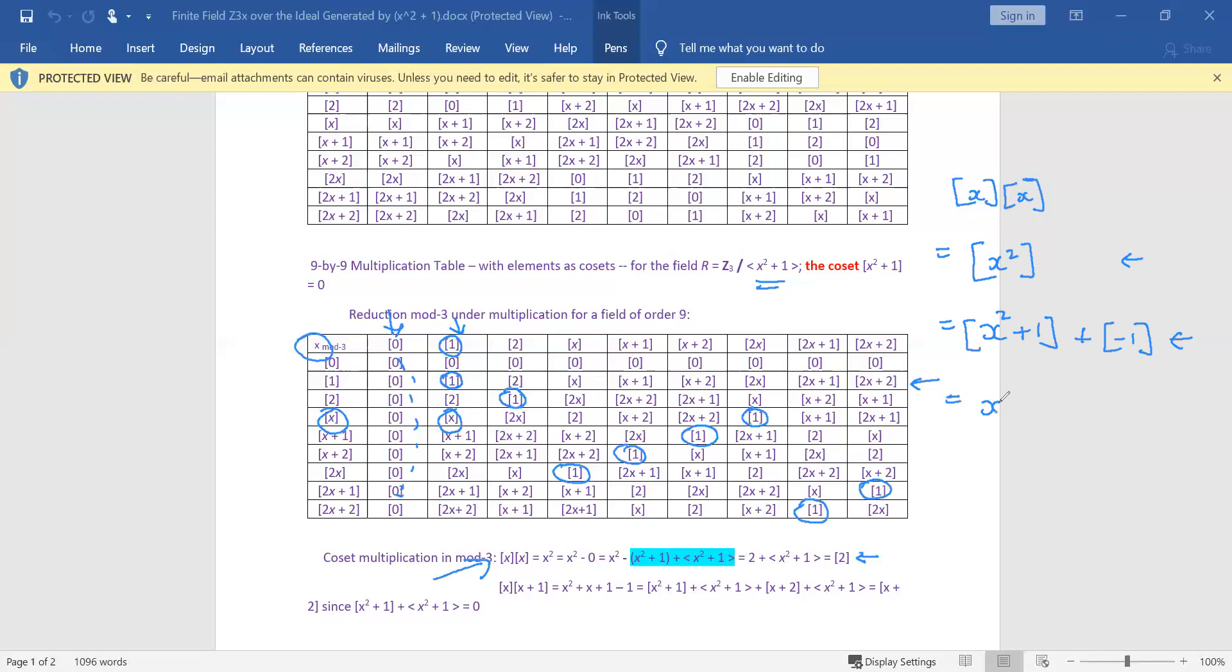But otherwise once you've done this a bit you would just go straight to this line because minus one or negative one is the same as two. And this thing here, that is a representative of that equivalence class but we can also just put zero there. And so we would expect to get two and I think that's what we get. Here's x times x and we get two.